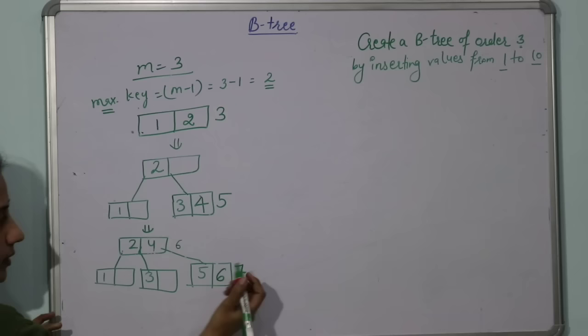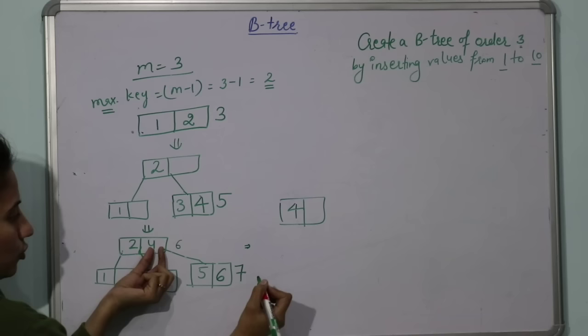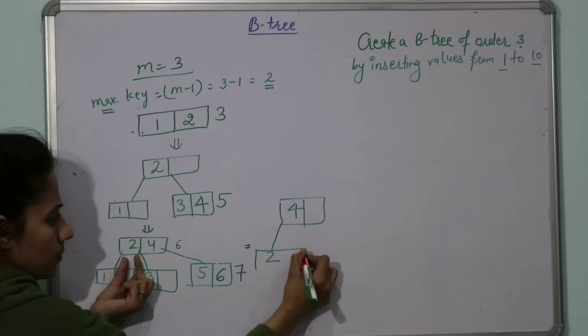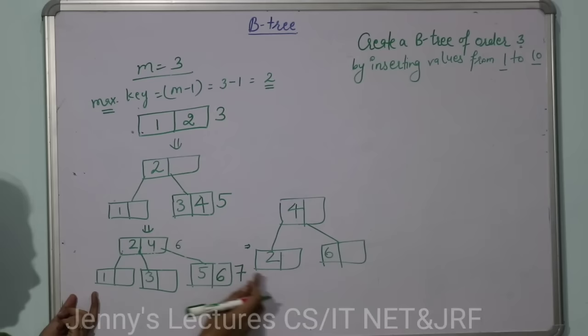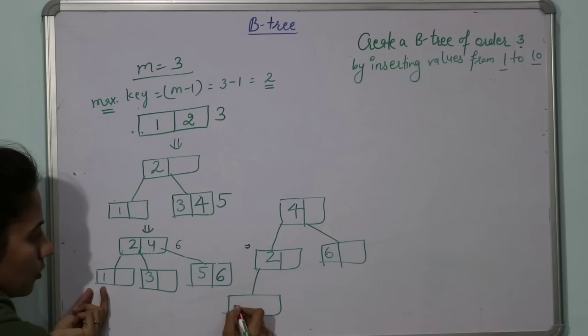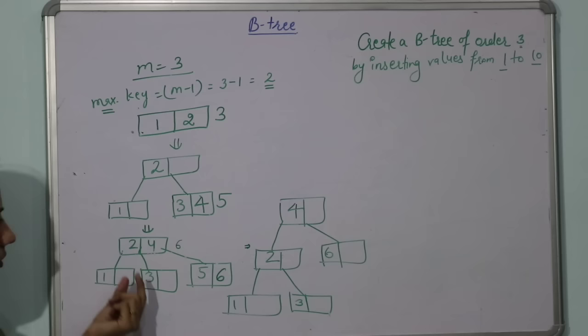The tree would be: 4 is the root. 4's left side has 2. 2's left has 1, 2's right has 3.